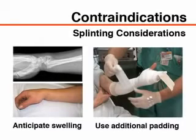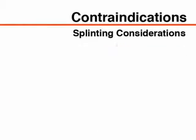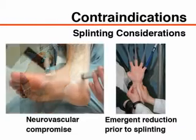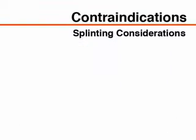For injuries prone to severe swelling, even a splint can become restrictive as the swelling increases. Additional padding may allow room for expansion in these circumstances. The presence of neurovascular compromise at presentation mandates reduction of the injury to establish vascular perfusion of the extremity prior to splinting and definitive care.